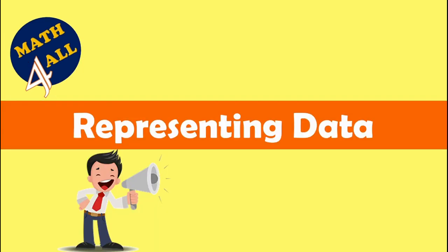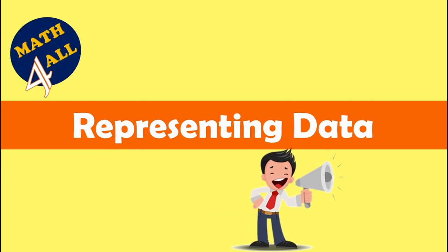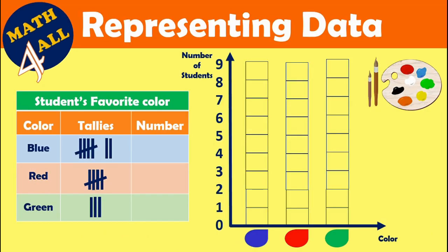Now let's learn how to represent data using tally marks. In this table you want to know the students' favorite color, then represent it on a graph. For blue, we have a set of five, then six, seven — seven tally marks.